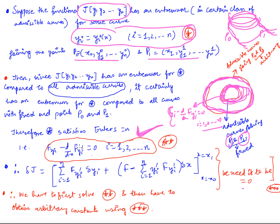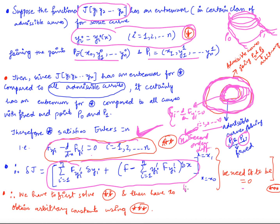So we are left with the boundary terms equal to 0. When finding the extremum, you solve this set of n second-order differential equations. Whatever arbitrary constants appear in the solutions, those constants are obtained using these boundary conditions. In the case of fixed endpoints, we used the conditions y_i(x0) and y_i(x1) being given. But now those are not given, so we must use these transversality conditions instead. Thank you.